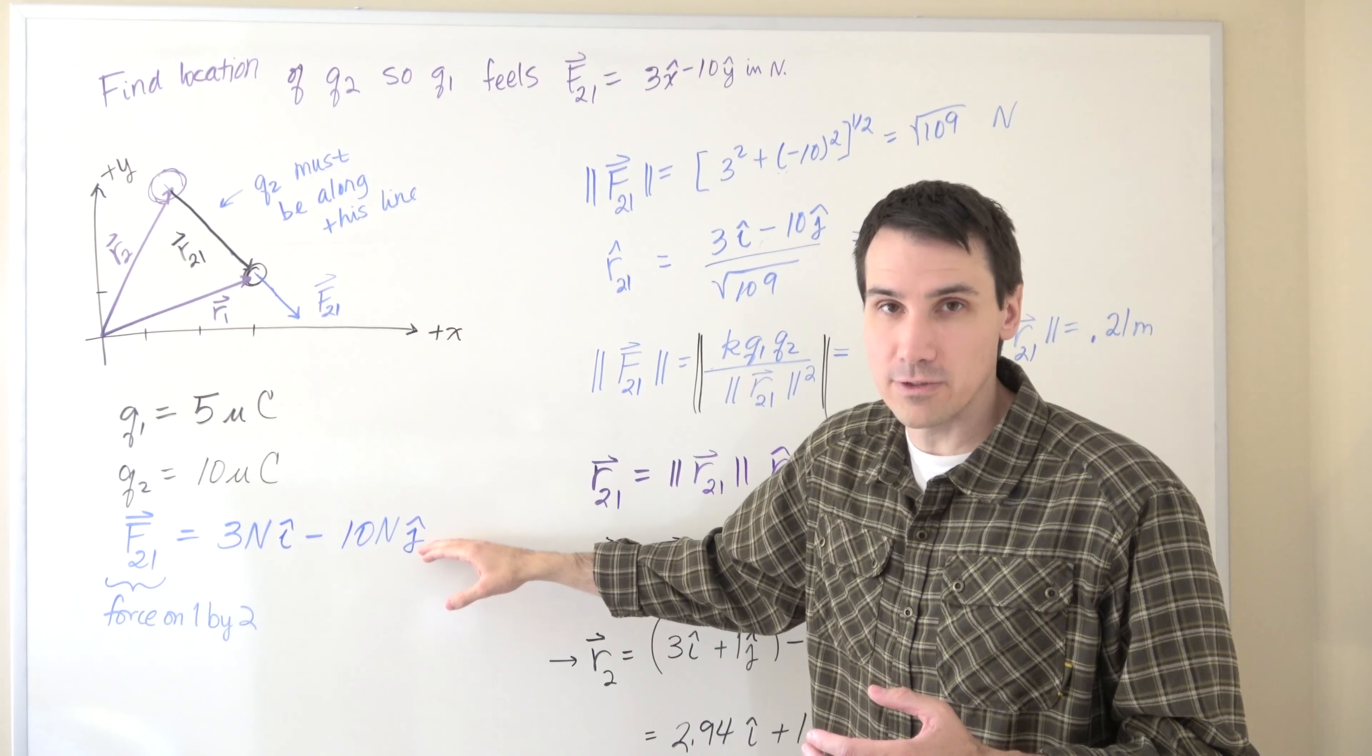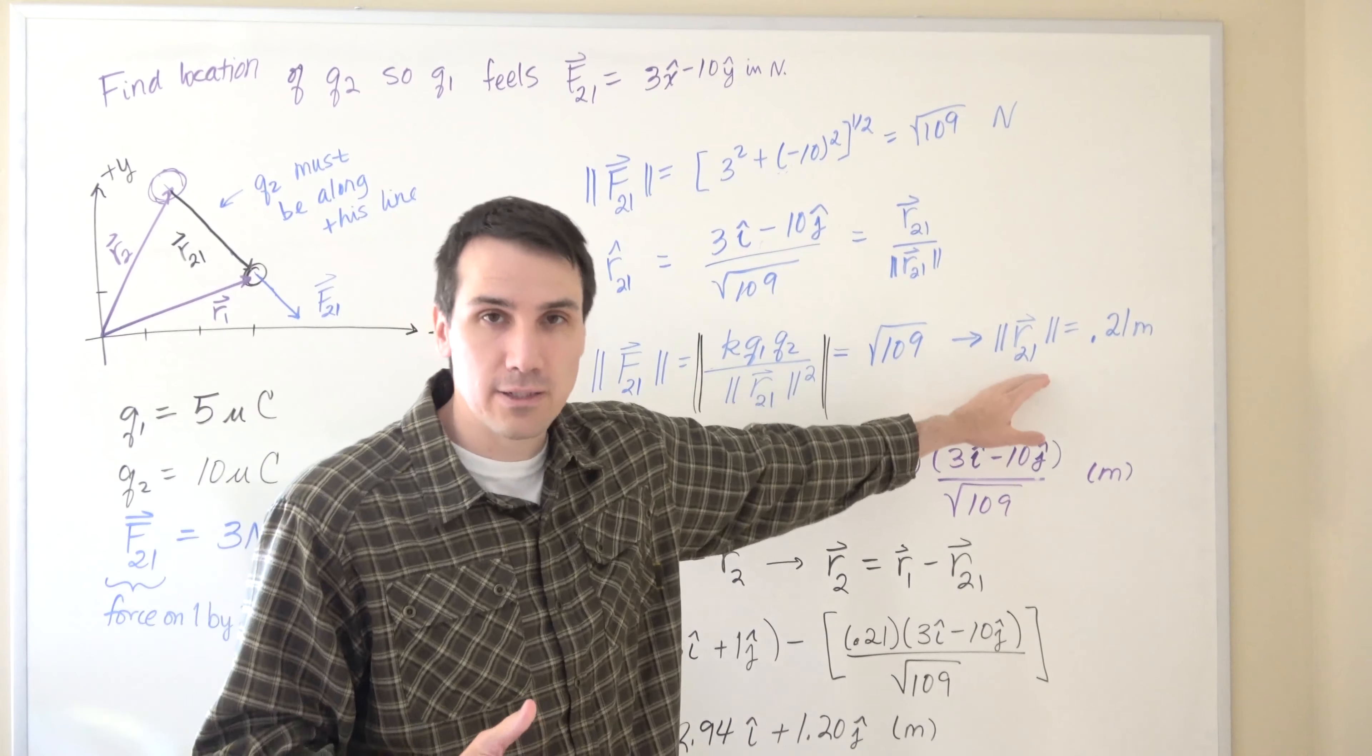First, we found the magnitude of the force between the two particles from the magnitude of our force vector. And then we used that magnitude in order to find the magnitude of the distance between the two particles.